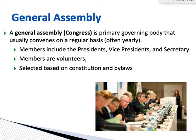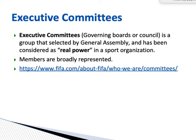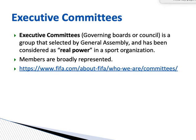Different organizations may call the general assembly by different names — FIFA calls it the Congress, the primary governing body that meets once a year to make major decisions. The executive committee is also known by different names: some call it the governing board, others call it a council. It is the group selected by the general assembly that holds the real power in the sports organization. Members are normally board representatives. In FIFA it's called the FIFA Council, and members represent all different continents, with women's representatives also involved to ensure decisions reflect the broader interests of the organization.